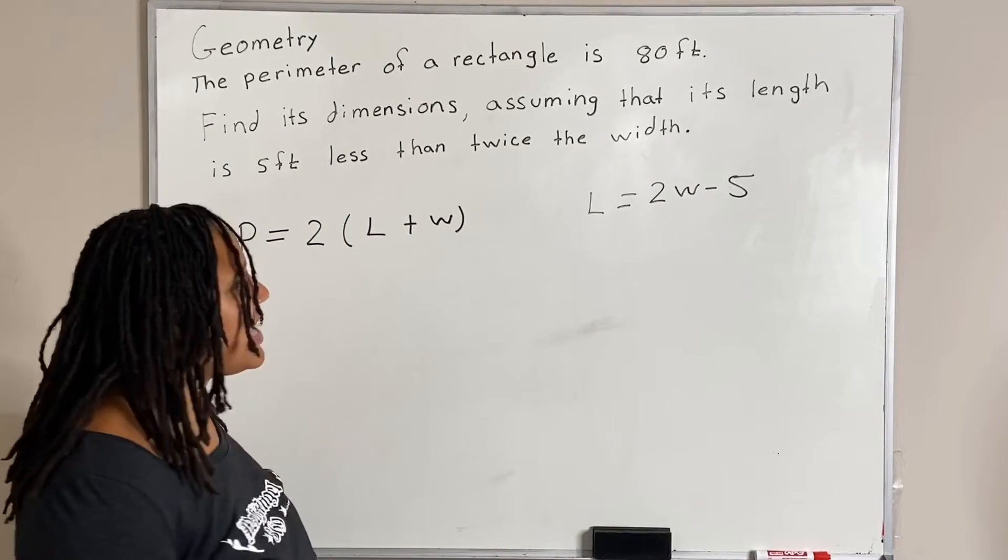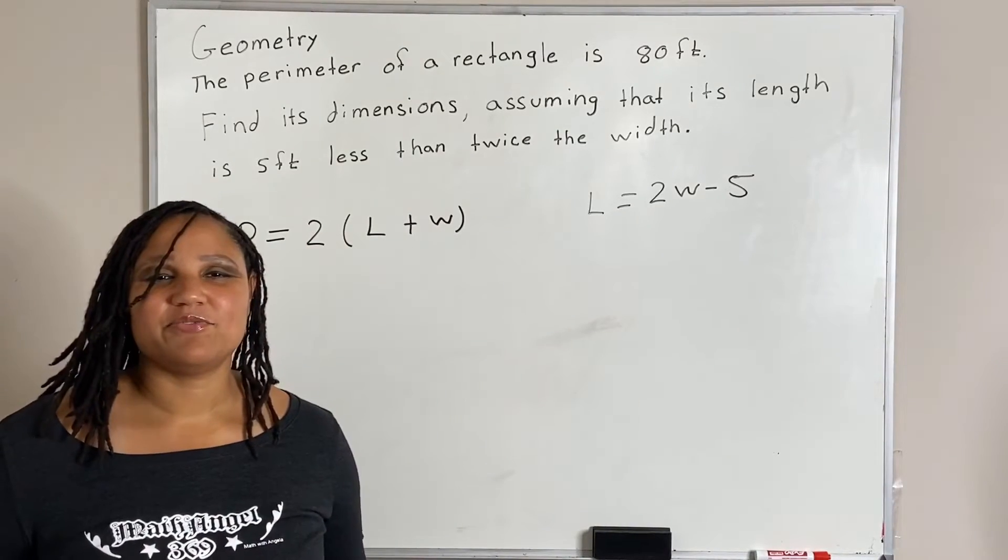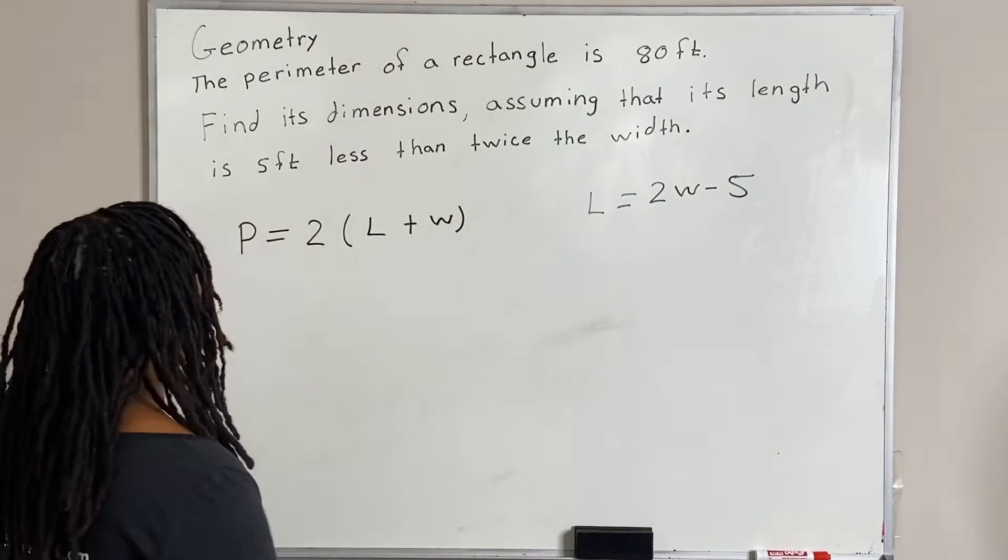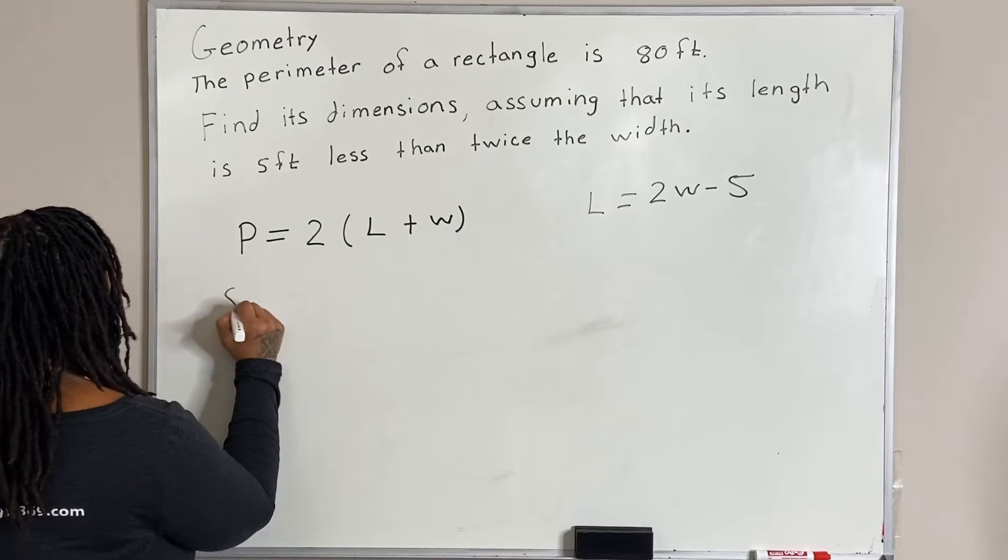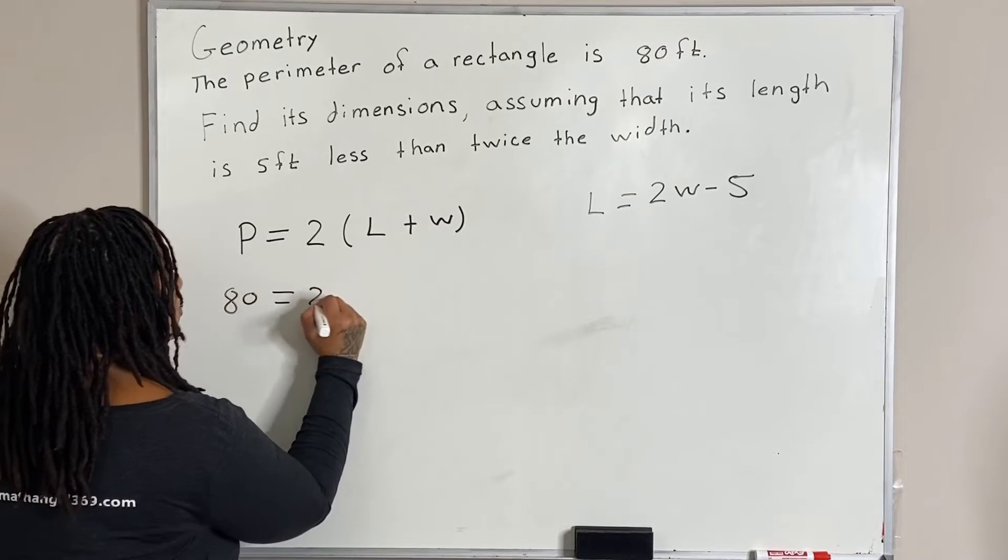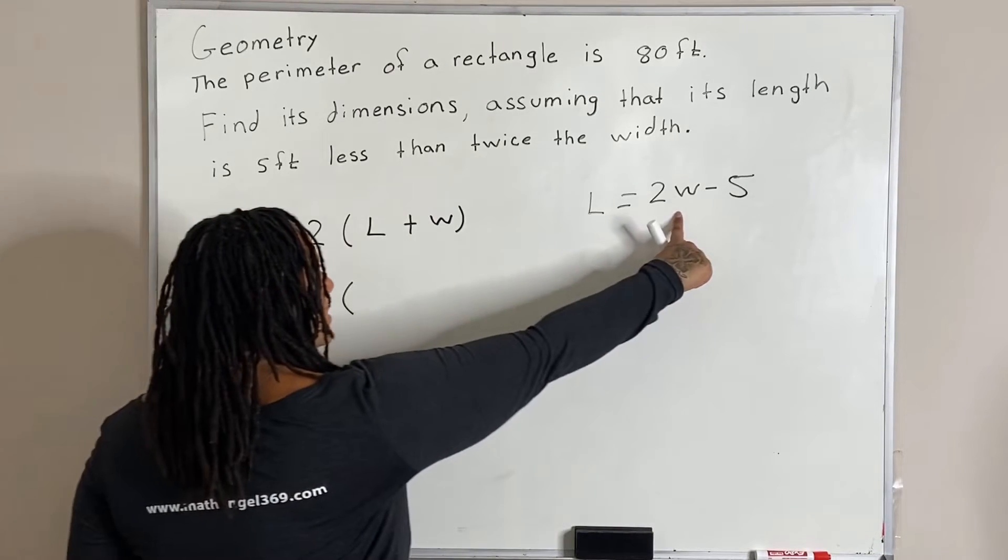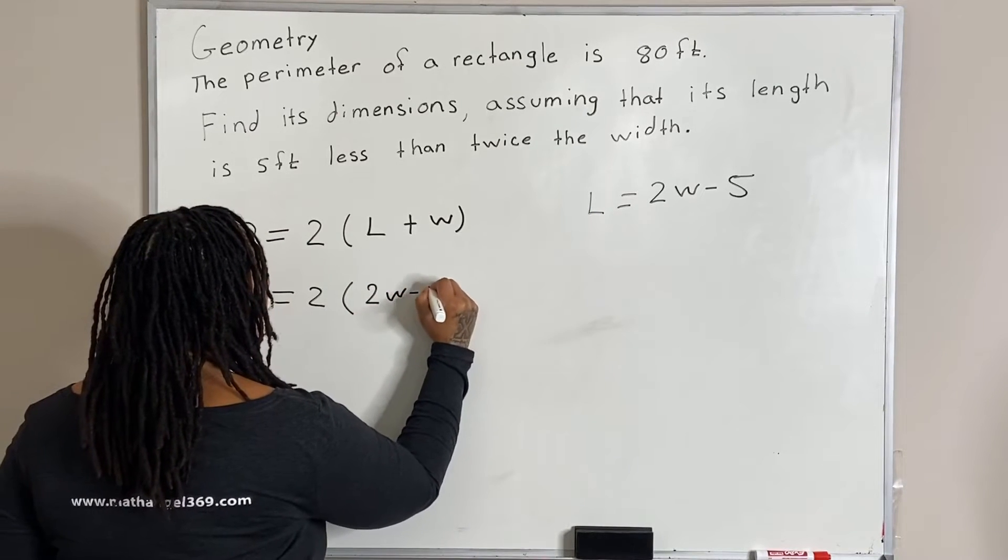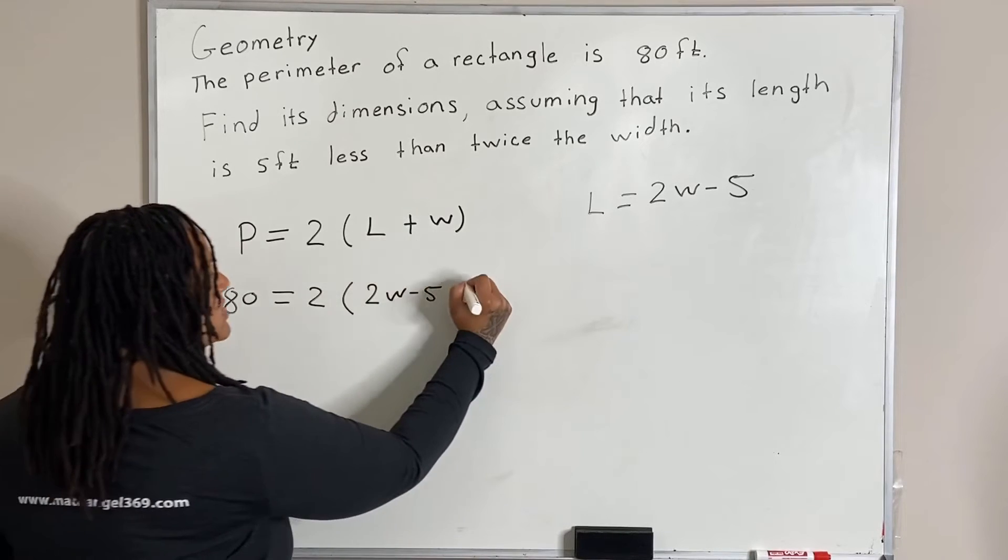So now that we have all of the pieces of information, we just plug it into the formula and solve. So P is given already. So we have 80 is equal to 2 times, we said the length is 2w minus 5. So I'm going to replace L with 2w minus 5, and then we have plus w.